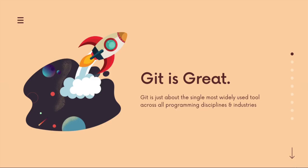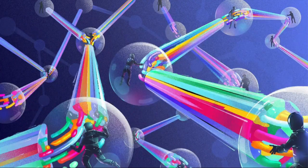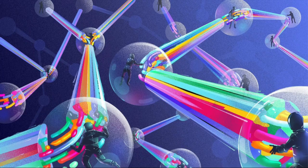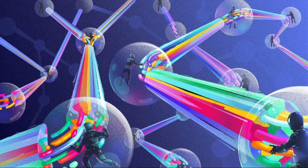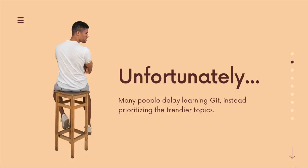If you're watching this, you probably already know that Git is this amazing, universal, widespread tool that, along with GitHub, enables and empowers millions and millions of users and companies — ranging from tiny startups all the way up to Fortune 50 companies — to build things together, to collaborate, and to maintain applications. A lot of people know it's crucial, yet it often goes ignored.